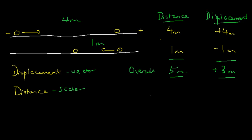So we have found the distance and displacement, and they're different. One is 5 meters and one is 3 meters. This clearly tells us that displacement is not the same as distance. When displacement is 3 meters, it does not mean that distance is also 3 meters. Distance and displacement have the same magnitude only when the displacement is always going in the same direction.